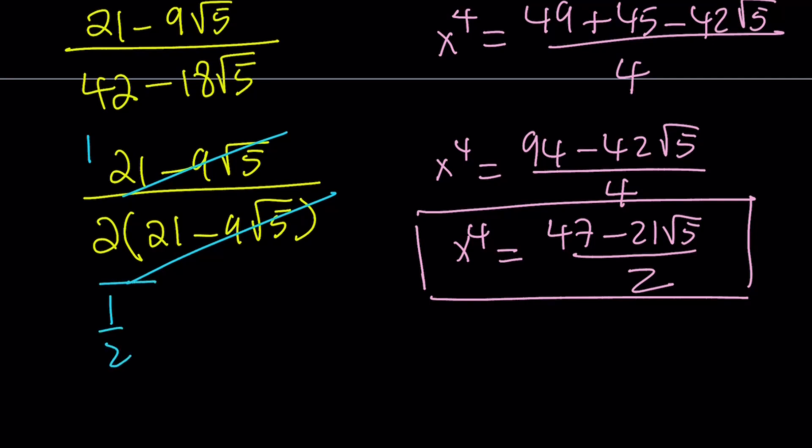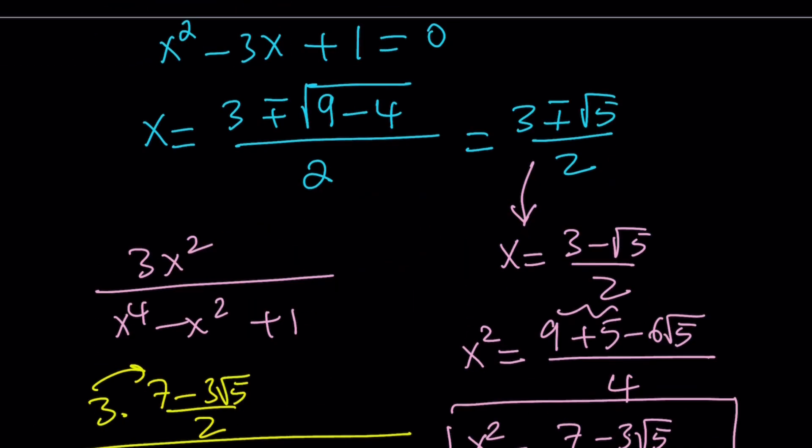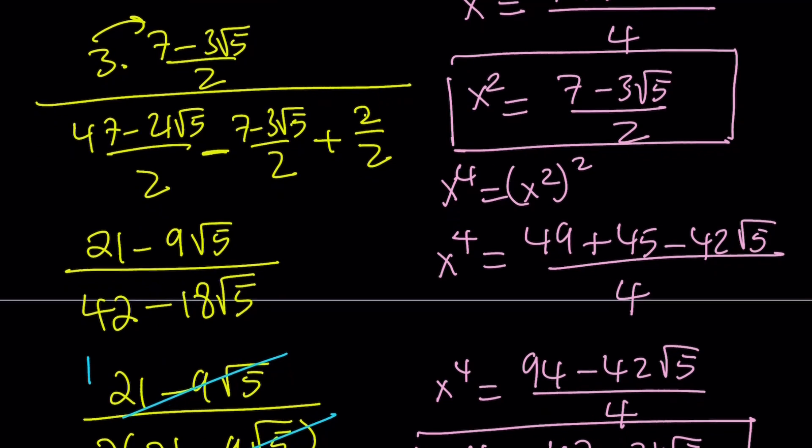We end up with 1 in the numerator, so the answer becomes 1 half. Wow, that was easy. Well, not that easy. It was a little brute forcey, but that's what the first method is all about. So we plugged it in. We found the value of x.